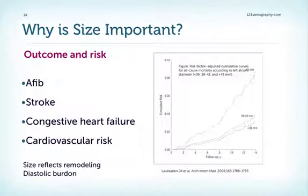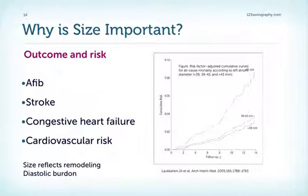Why is left atrial size important? Simply because it is a very important outcome and risk factor. This has been shown in atrial fibrillation, stroke, and congestive heart failure, and it is an independent risk factor for cardiovascular death. The size of the left atrium reflects left atrial remodeling and the integral of diastolic burden. Therefore, as already mentioned, it has been termed the HbA1c of cardiac function.